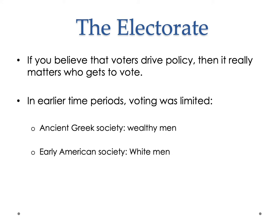The electorate is the set of people who are allowed to vote. If you believe that voters drive policy, it really matters who gets to vote. In earlier time periods, voting was severely limited. In ancient Greek society, only wealthy men were allowed to vote. In American society, for a long period of time, only white men were allowed to vote. Democracy is very rare until about 1800, and there have been many arguments about who has the right to vote.